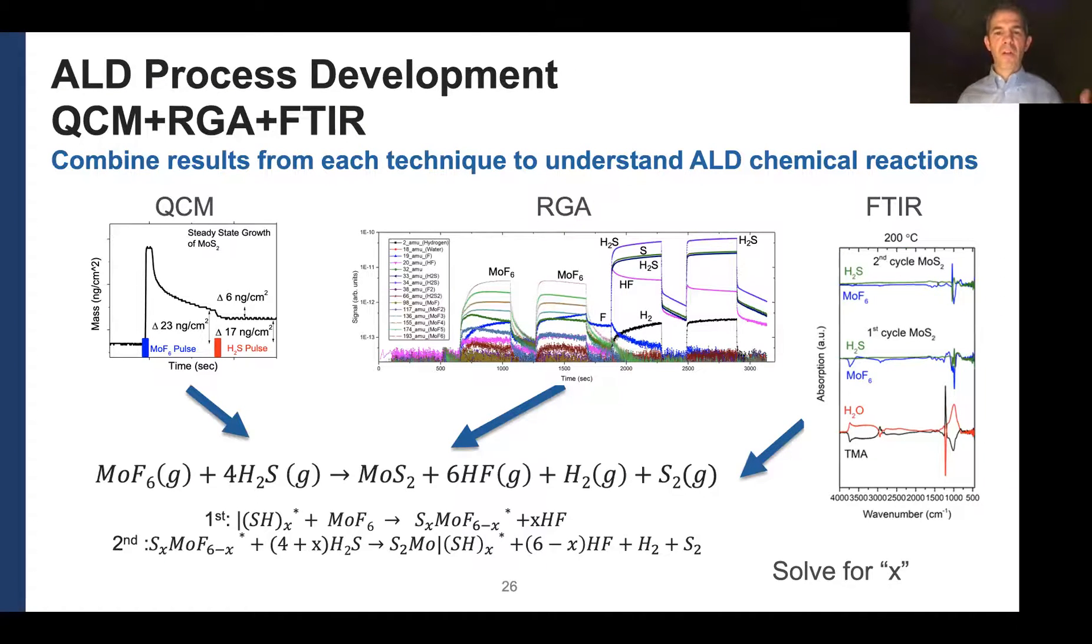And you try to take all the information from these different tools, how much mass change you had per half cycle, what the byproduct evolution is, what's the surface chemistry look like with FTIR, and then take all that information and try to establish what are the chemical equations that are behind the film you're trying to grow. So you might have MoF6 plus H2S is trying to grow MoS2 and maybe we have some of these byproducts form. This is sort of, you know, one possible reaction. This might be for steady state overall reaction, but it's implemented in the two half cycles of ALD is sort of the main, one of the big areas of research in developing an ALD process.